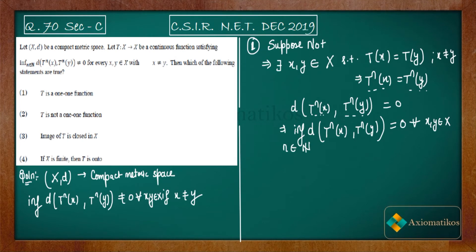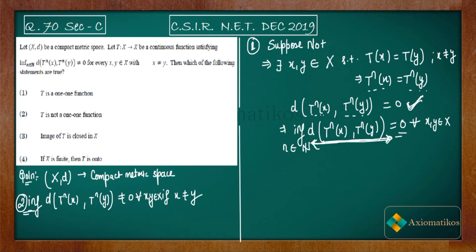The infimum is zero because zero is already attained — note that distance is always non-negative, so the infimum is ≥ 0, and since zero is attained, it equals zero. This contradicts the given condition. Therefore our supposition is wrong and T must be one-to-one. So Option 1 is correct, and consequently Option 2 is incorrect.